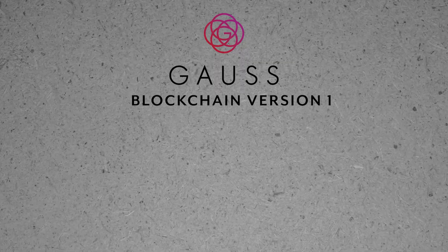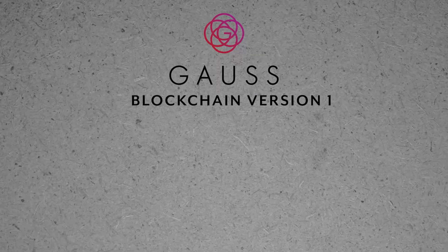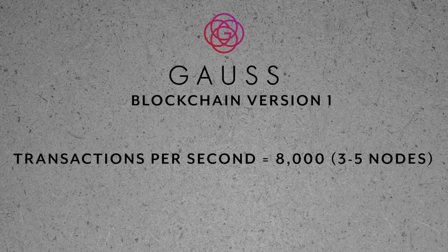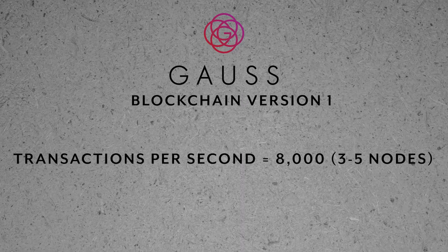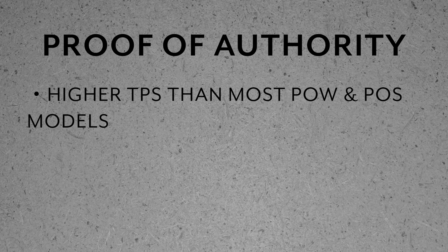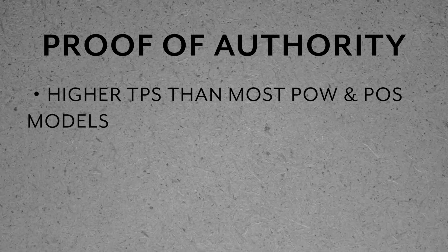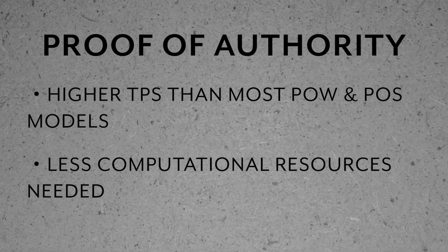In version one of the GOSS blockchain, transaction speed can in theory achieve up to 8,000 transactions per second with three to five nodes. Unfortunately, if you aren't a trusted partner with GOSS, you won't be able to purchase a node. The advantages of using a proof of authority mechanism include more transactions per second that can be executed and also fewer computational resources needed.